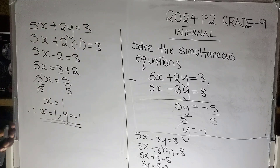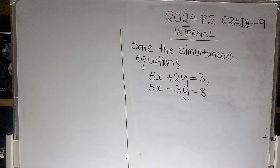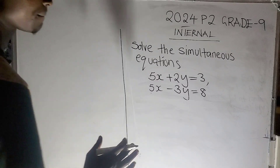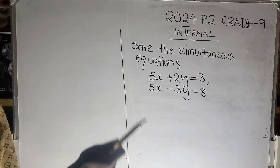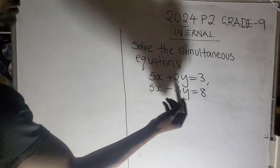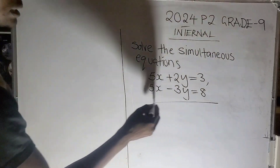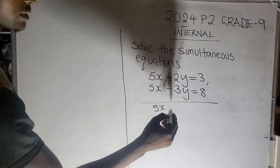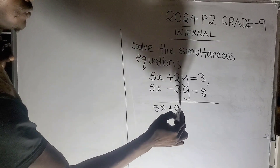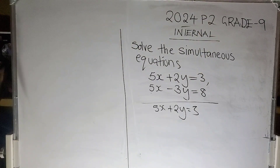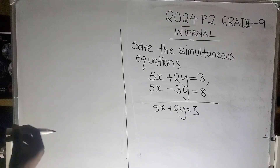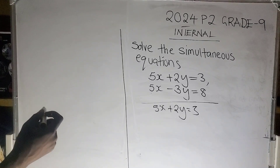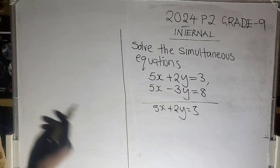Now I have used the elimination method. Let's use the substitution method to solve the same question. For the substitution method, let's take the first equation: 5x plus 2y equals 3. I want to solve for x, so I will rearrange: 5x equals 3 minus 2y.